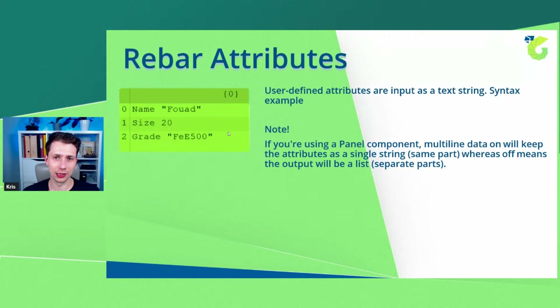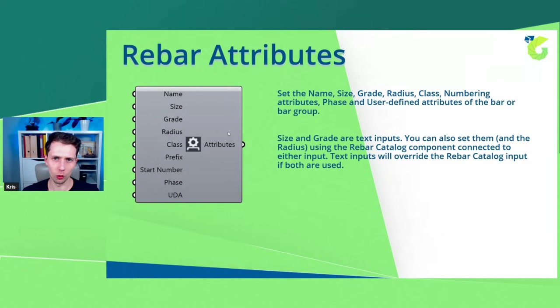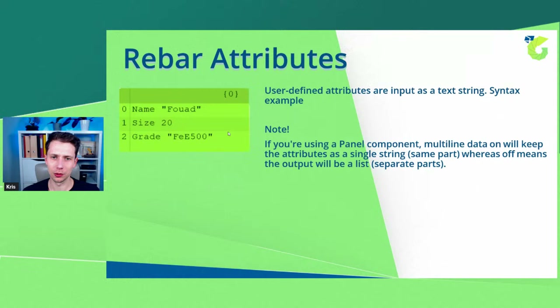Next is the Rebar Attributes component: you can set the name, size, grade, bending radius, class, prefix, stand number, face, and user-defined attributes. All these attributes can be set through Grasshopper. You can also use a text input with the correct syntax — name, size, and grade — so you don't always need this component. Knowing the syntax lets you also use a panel, which can save space on your Grasshopper script.